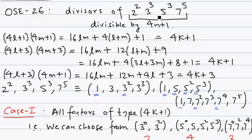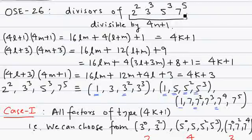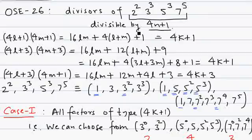We need to find divisors which are divisible by 4k plus 1. We have to select numbers where 2 is available 2 times, 3 is available 3 times, 5 is 3 times, and 7 is 5 times. We choose numbers such that when we multiply all of them, the divisor is of the type 4k plus 1.